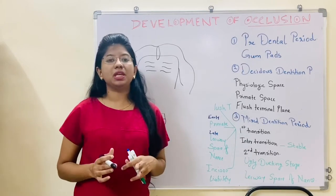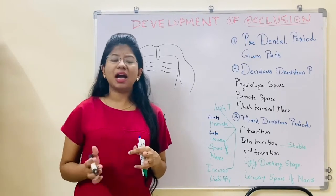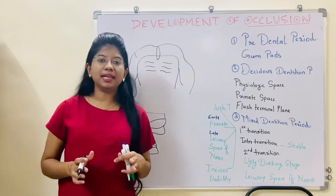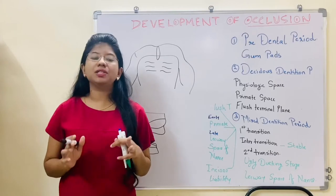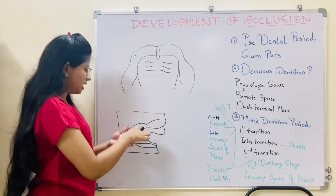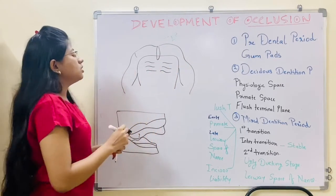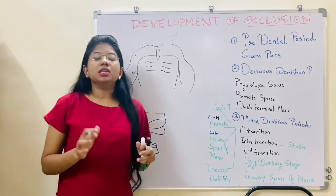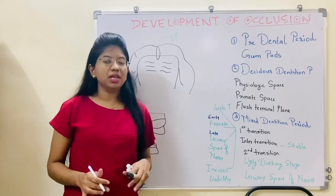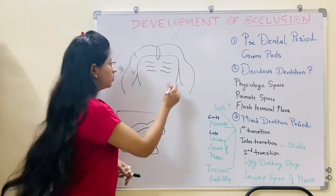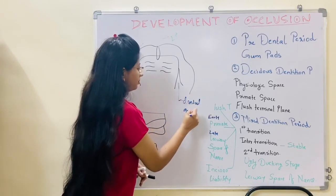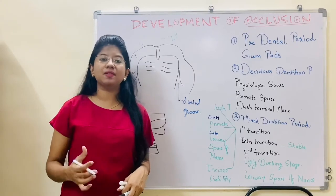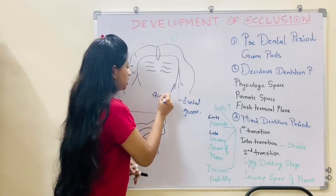In the pre-dental period we are going to see about gum pads. Gum pads are the alveolar process. The gum pad is a horseshoe shape, pink in color, covered by dense fibrous periosteum and firmly attached. In the gum pad you can see the incisive papilla. The gum pad has a labial portion, buccal portion, and lingual portion. Both portions are divided by a groove called the dental groove. There is also a gingival groove which separates the gum pad from the hard palate and the floor of the mouth.